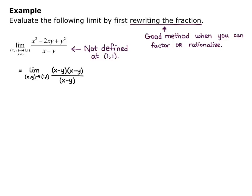This is all over (x - y), and now I can cancel a factor of (x - y) from both the top and the bottom. So this is equivalent to the limit as (x, y) goes to (1, 1) of the function (x - y). Now I can just plug in the point: I get 1 - 1, and the limit is 0. Whenever possible, just plug in the point. If you can't, but it's easy to factor or rationalize, rewrite your fraction first, then plug in the point.